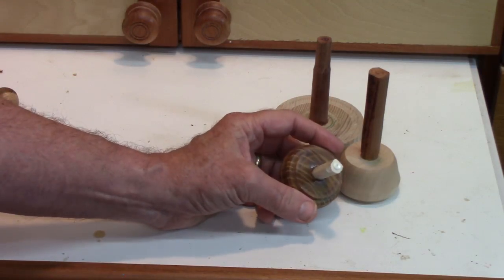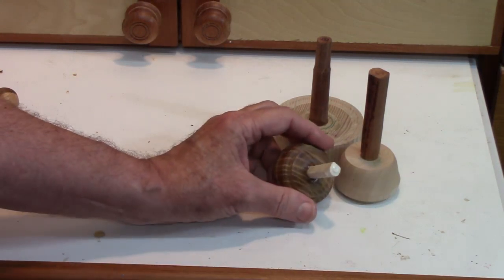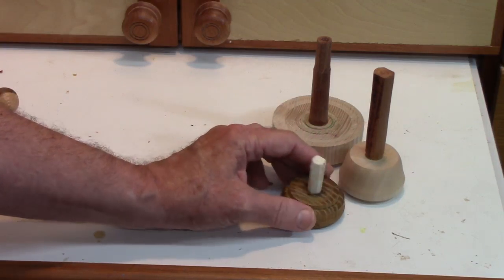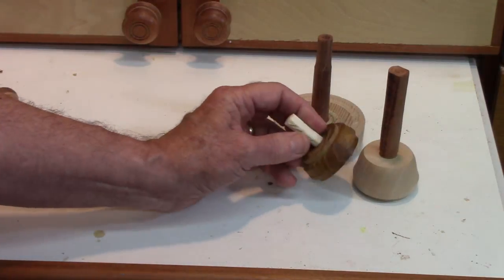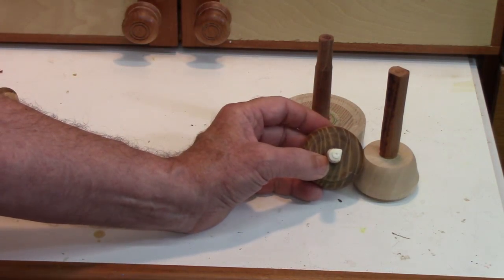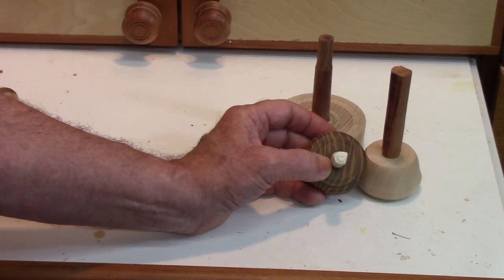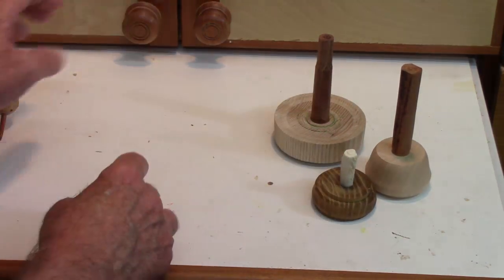This technique can also be used for turning odd scraps like a piece of bone which I use to do an insert. You just kind of knock it off, doesn't have to be perfectly round, but enough where you can force fit it into a hole with some glue.